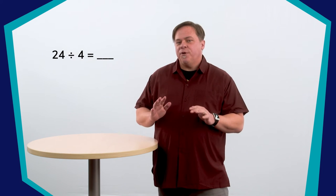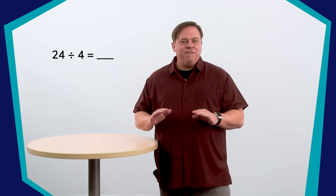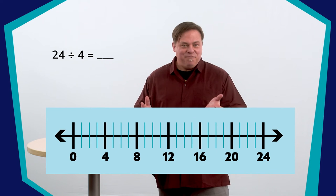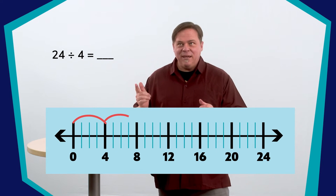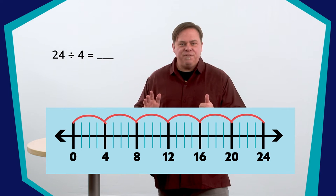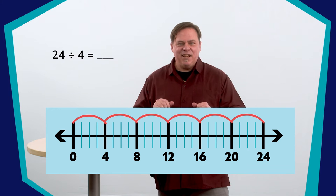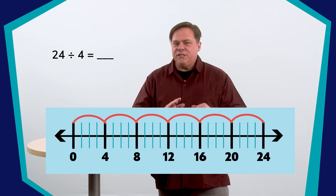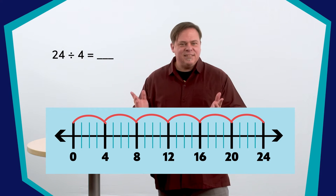You could also do what I call step counting. I need to divide twenty-four by four, so I can figure this out by counting by fours. Four, eight, twelve, sixteen, twenty, twenty-four. I counted six times, so twenty-four divided by four is six.